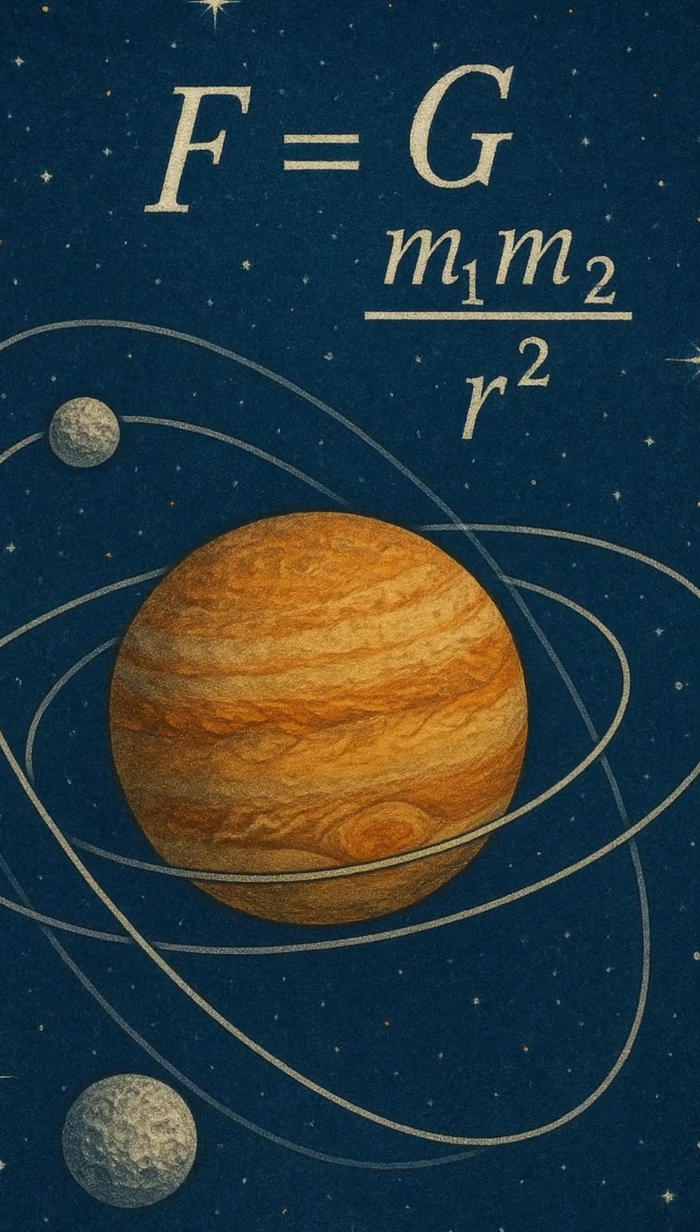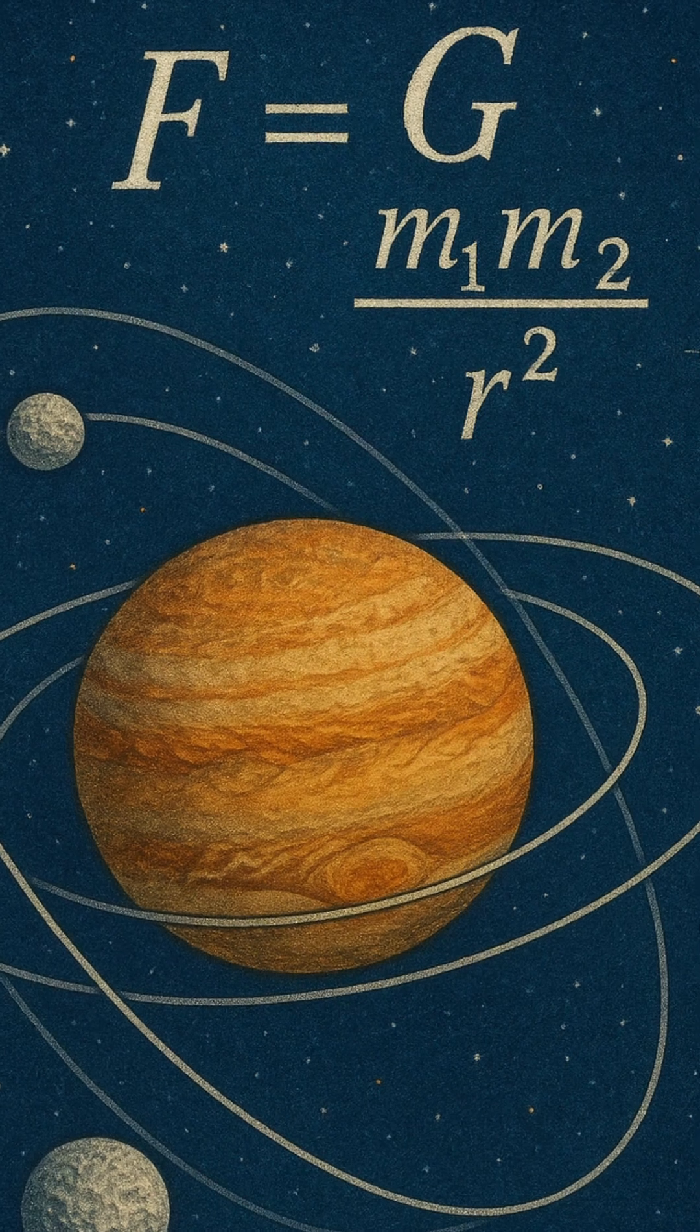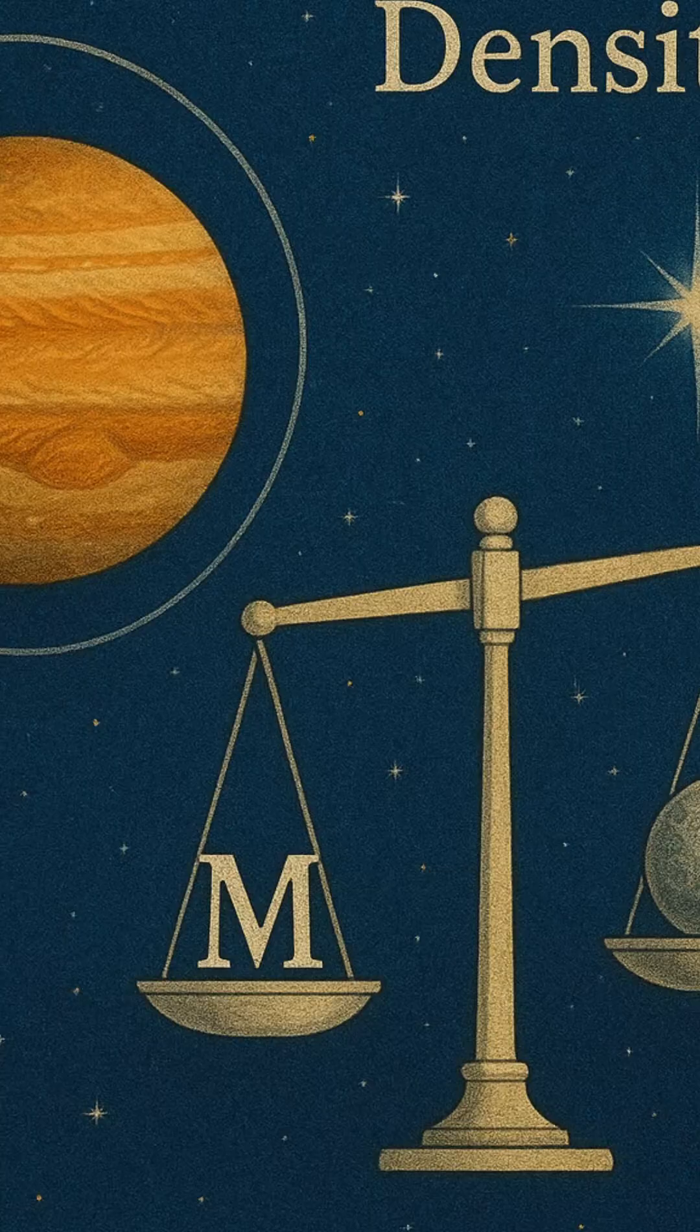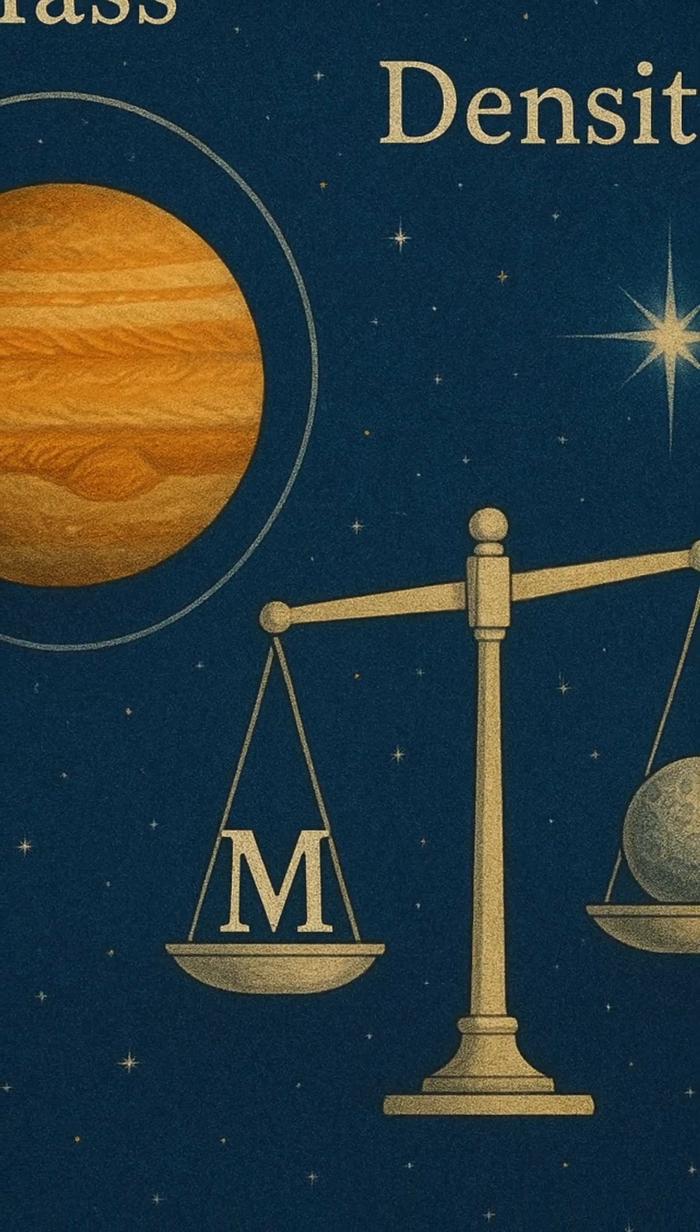Imagine watching the moon orbit Earth. Its speed, its distance, and the time it takes to complete a revolution are all whispers from the planet's mass, echoing across space.